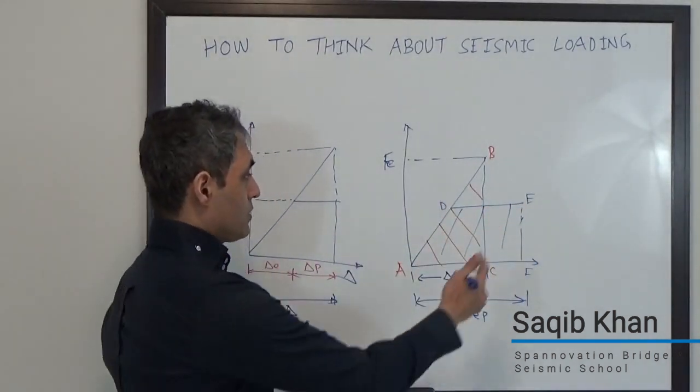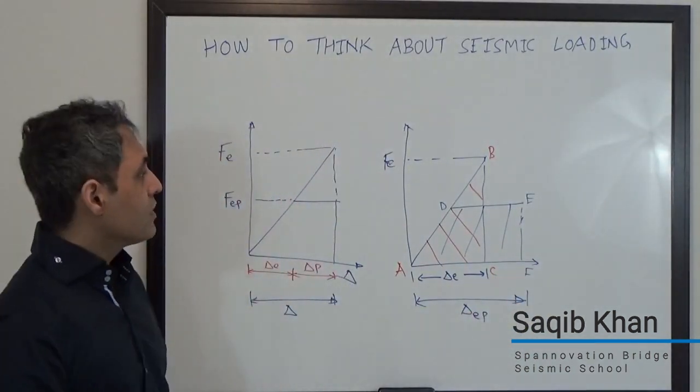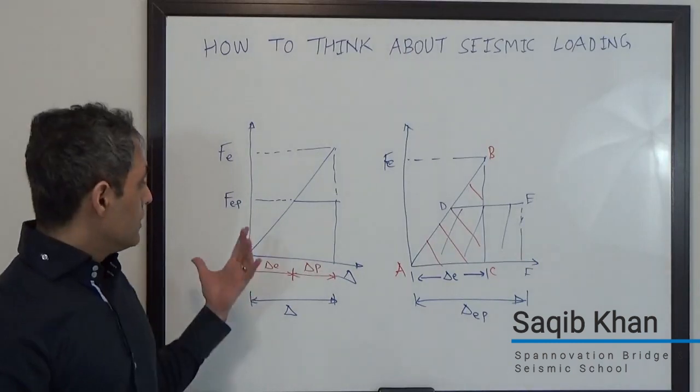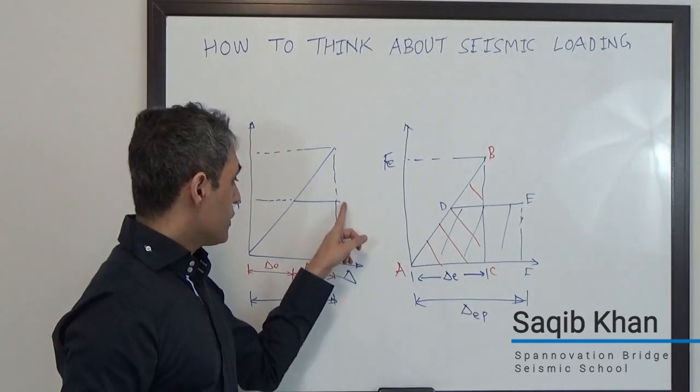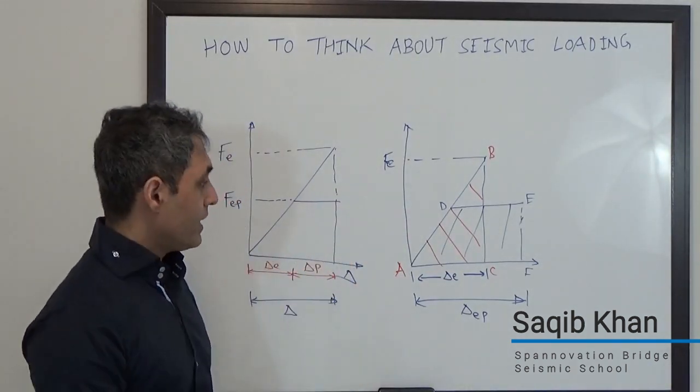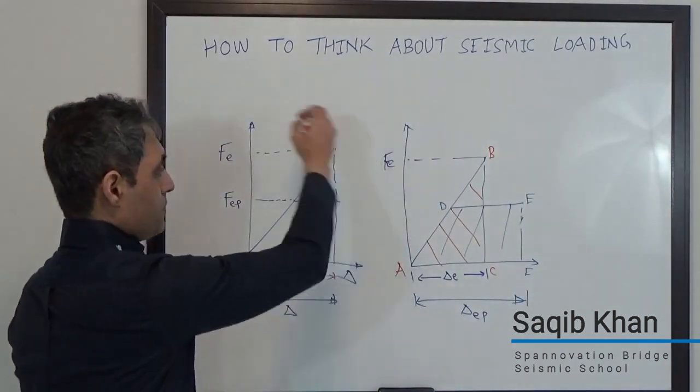So the area under ABC, this triangle is the same as the area under ADEF. So again, the elasto-plastic system will have to go through this delta, which is larger. However, the moral of the story is still the same. We can think about the force, and we have to think about the force, but at the end of the day,